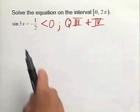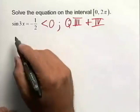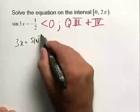The first thing we want to do here is isolate the 3x and we're going to undo the sine by taking the inverse sine of both sides. So taking the inverse sine to the left will leave us with simply 3x. On the right, we'll have the inverse sine of negative 1 half.